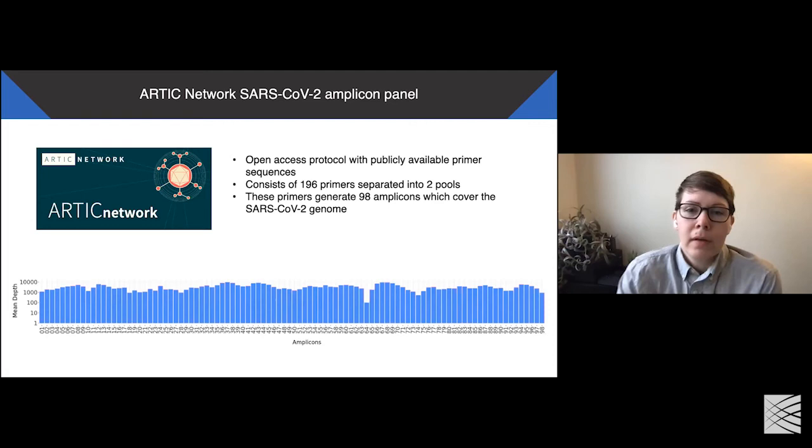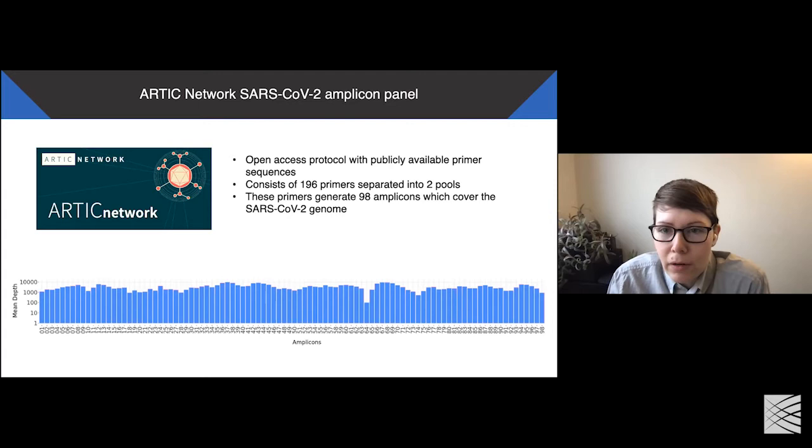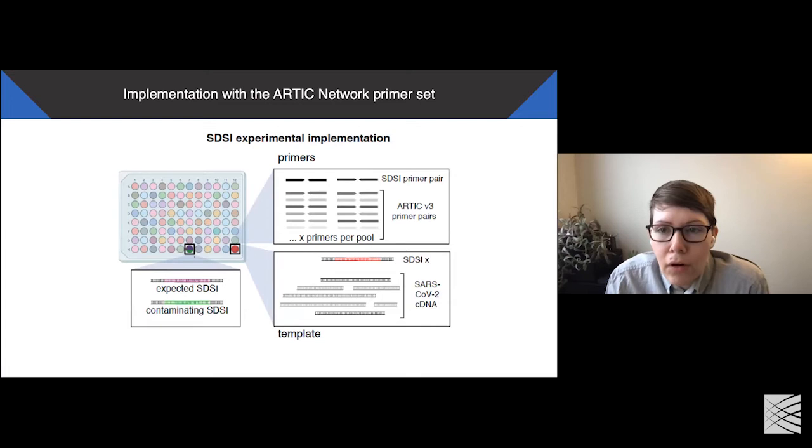Okay, so after this, we worked to apply these SDSIs to an amplicon sequencing panel put forth by the ARTIC network. This ARTIC panel consists of an open access protocol with publicly available primer sequences. The panel has 196 primers separated into two pools, which generates 98 amplicons that cover the SARS-CoV-2 genome. This is the most widely used primer set for SARS-CoV-2 sequencing and results in decent coverage across the genome. To incorporate these SDSIs into the ARTIC panel, we simply place a unique SDSI into each sample on a plate, and then in addition to adding the ARTIC primer pool, we would also add the SDSI primer pair.